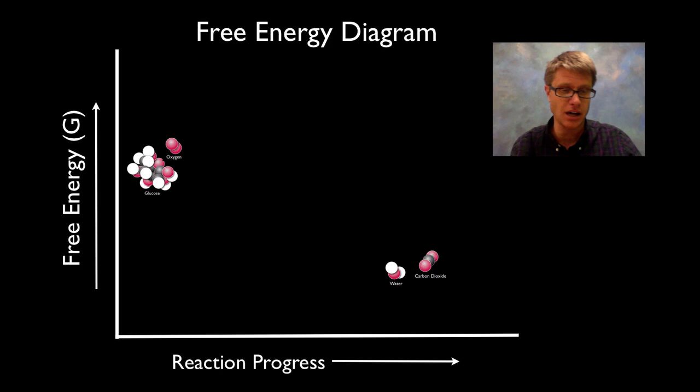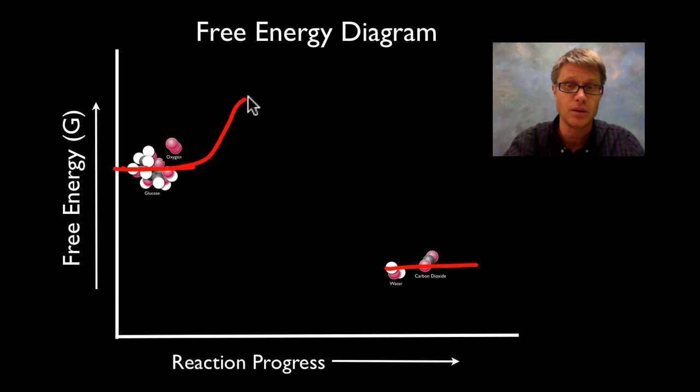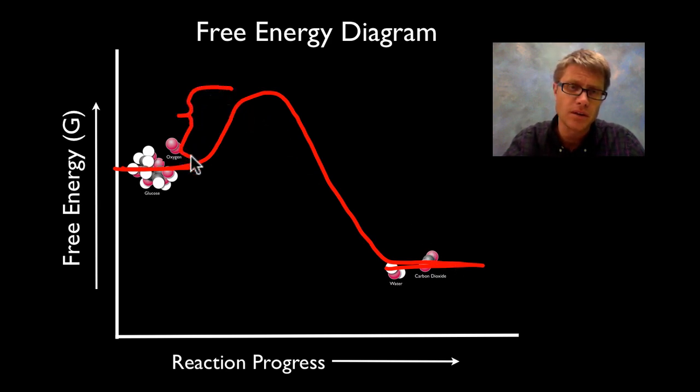Let's look at an energy diagram. That glucose and oxygen have a certain amount of free energy here on the side. When it's done they're going to have less energy. The energy diagram is basically going to go up and then down. This is what an exergonic or energy releasing reaction looks like.